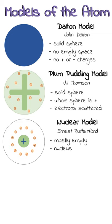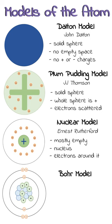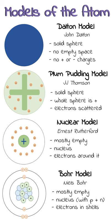The next model was the Bohr model by Niels Bohr. This model was also mostly empty space and it had a nucleus, but the nucleus had protons and neutrons in it, and the electrons orbited the nucleus in shells.